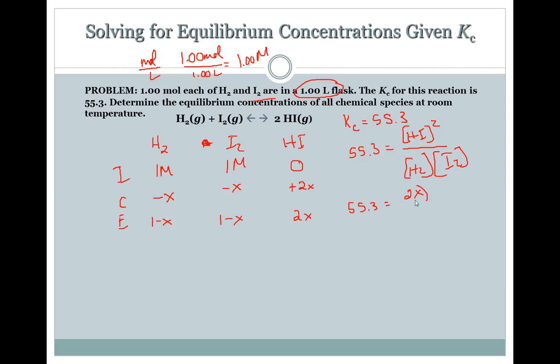The question also asks us for the equilibrium constant. That's going to be the HI, the products over the reactants, and we use the concentrations at equilibrium. The equilibrium concentration of HI is 1.87 times 10 to the negative 3 squared. H2 is 6.5 times 10 to the negative 5.